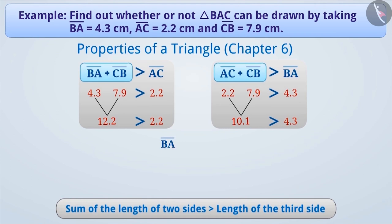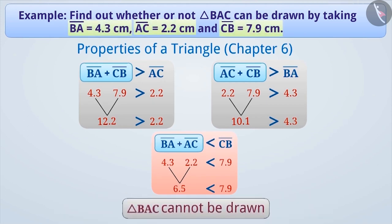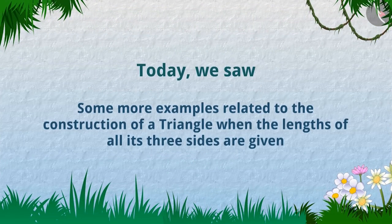But the length of BA is 4.3 cm and the length of AC is 2.2 cm. The sum of their lengths is 6.5 cm, which is smaller than the length of side CB (7.9 cm). That is, the sum of the lengths of two sides of triangle BAC is not greater than the length of the third side — in fact, it is smaller. Since this condition is not satisfied, we cannot draw triangle BAC with the given measurements. Today, we saw some more examples related to the construction of a triangle when the lengths of all three sides are given.